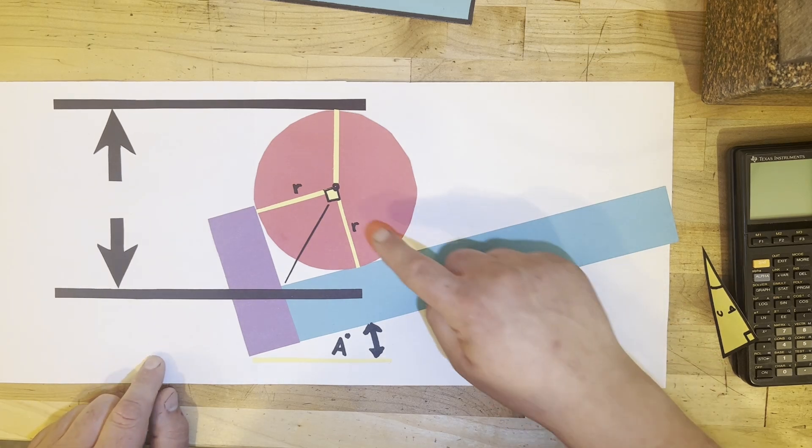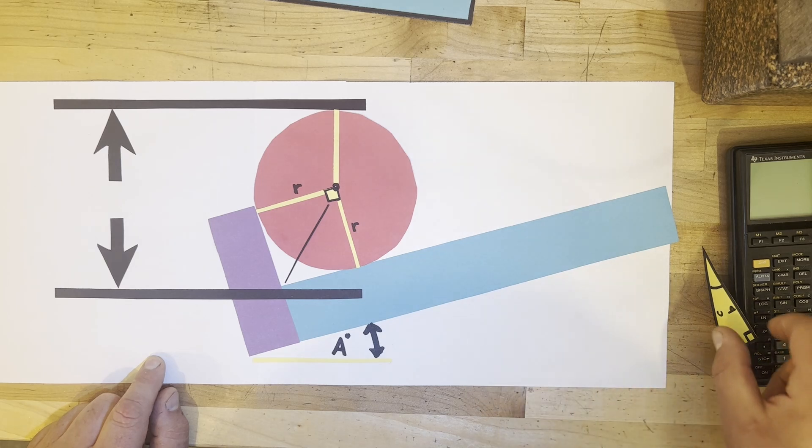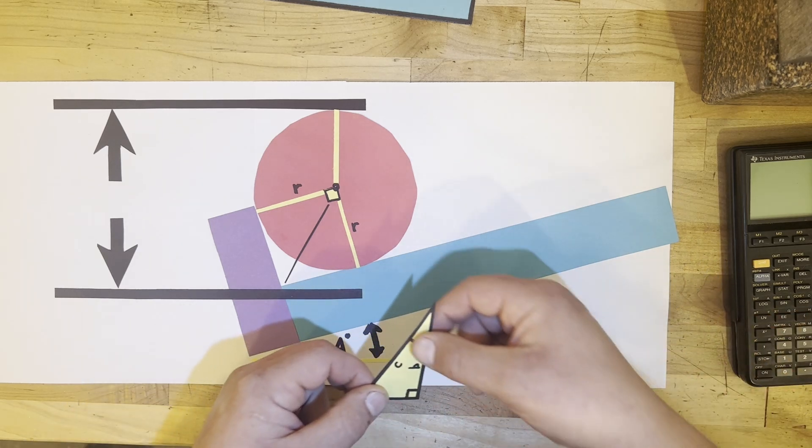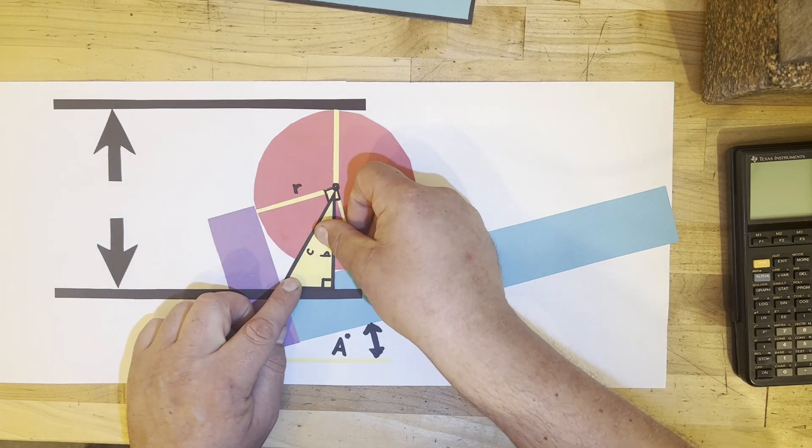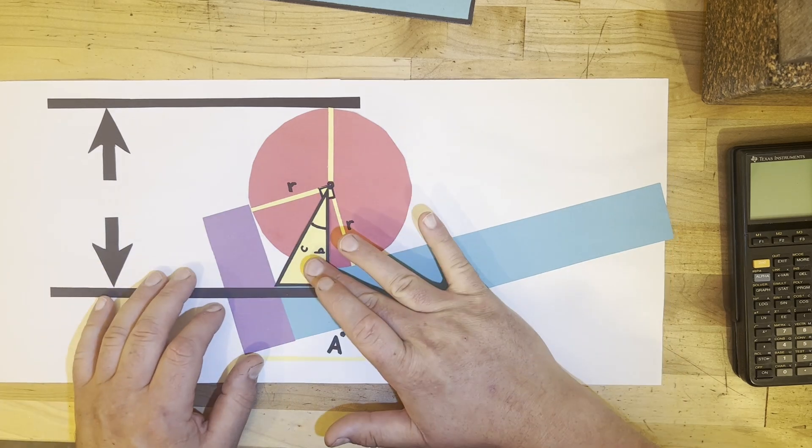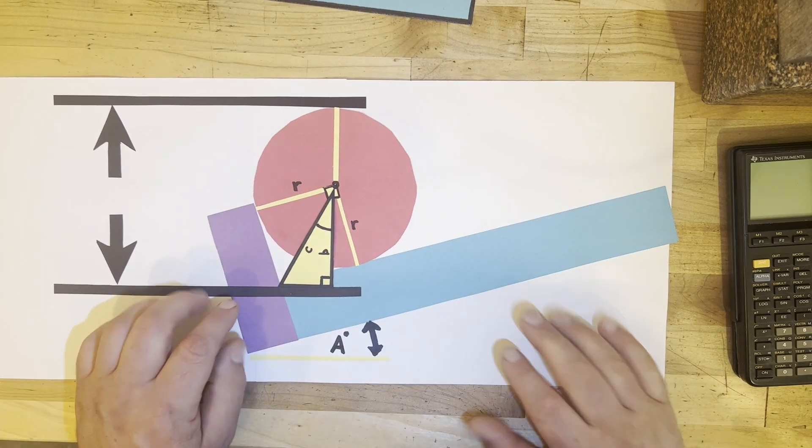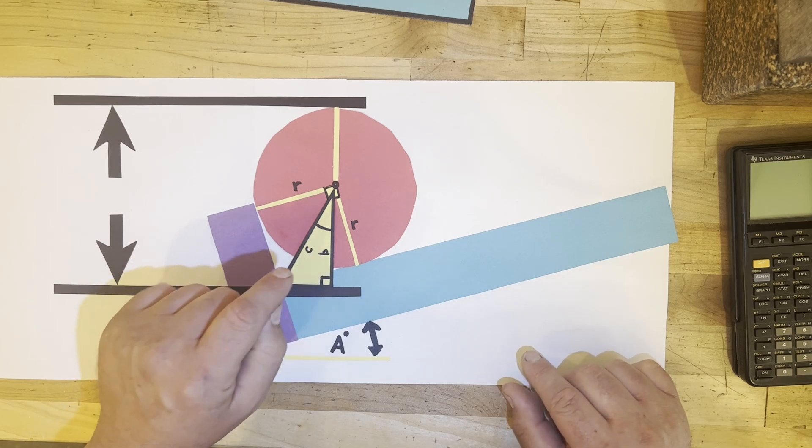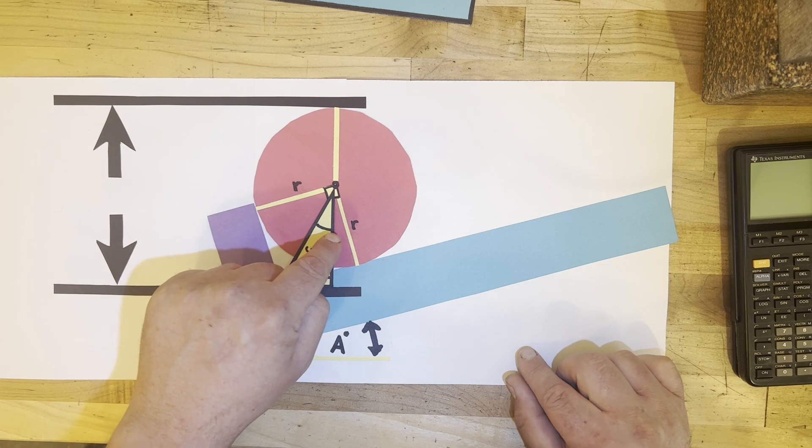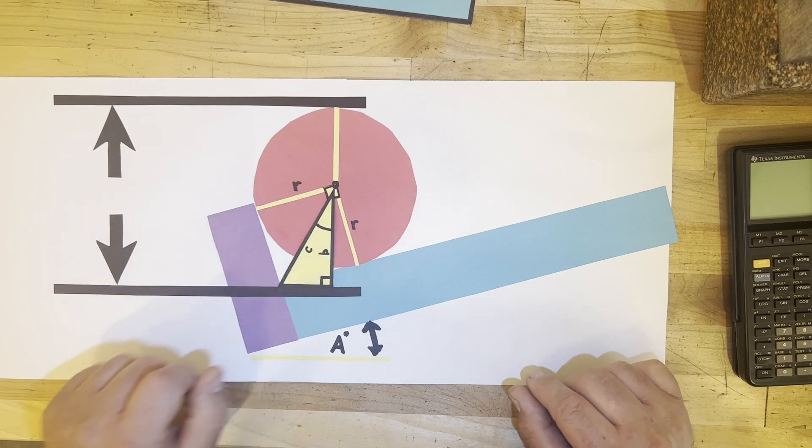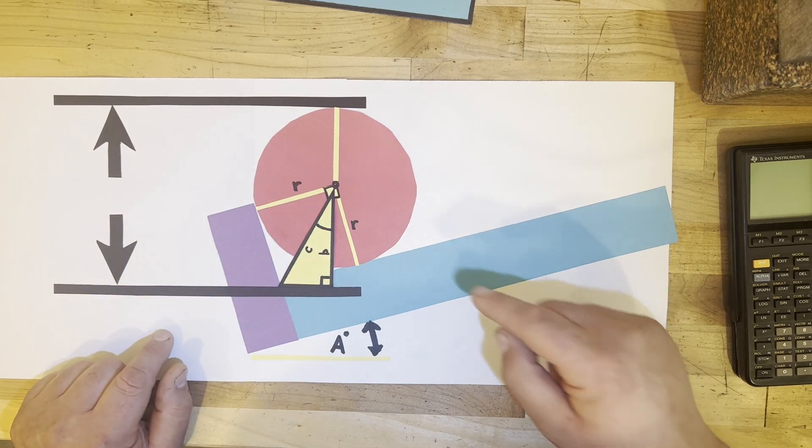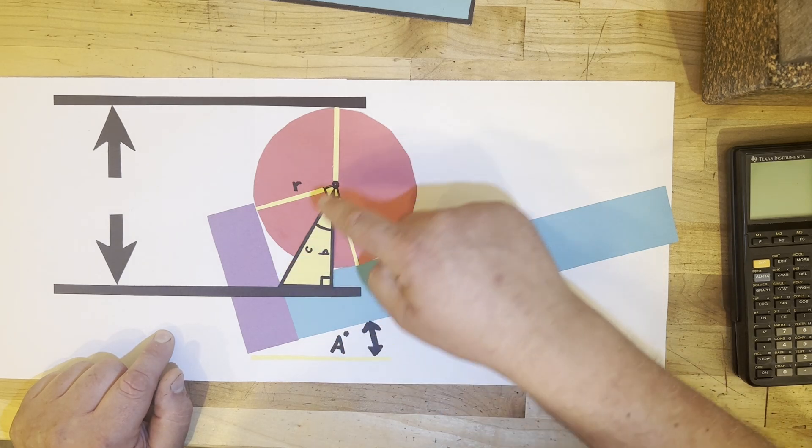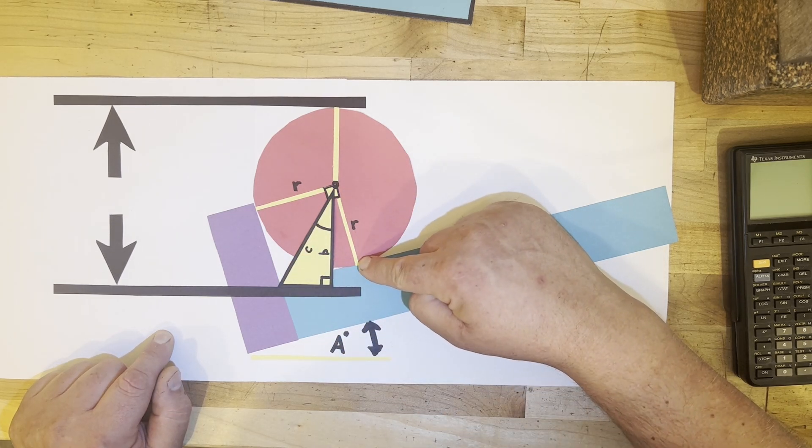Once we're armed with that knowledge we can draw another triangle, and we now know what length C is. If we could solve length B we're there, so we just have to figure out what this angle is in order to solve length B. We know that from length C to this radius line is 45 degrees.